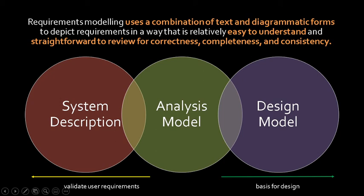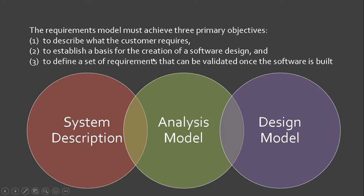In requirements modeling, we use tools to represent user requirements so that they become easy to understand for both customers and developers or software engineers. As mentioned in the previous lesson, the models are used as a means to validate the user requirements and as a basis for establishing software design. In a nutshell, the requirements model must achieve three primary objectives: first, to describe what the customer requires; second, to establish a basis for the creation of the software design; and lastly, to define a set of requirements that can be validated once the software is built.